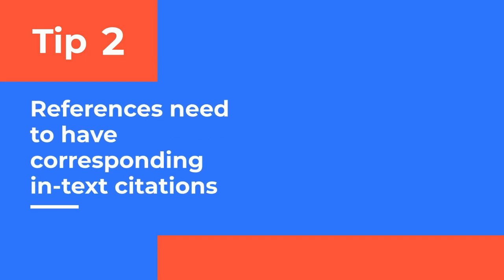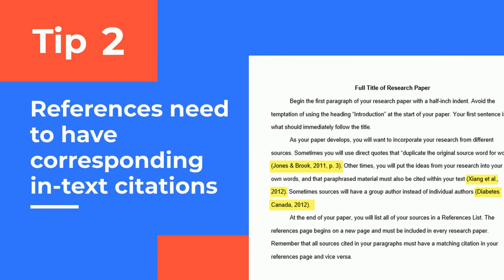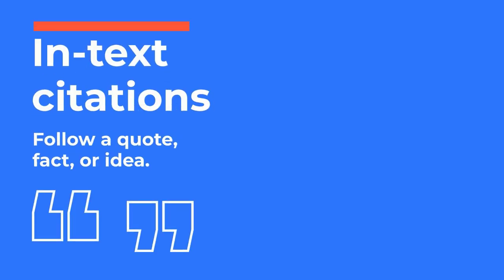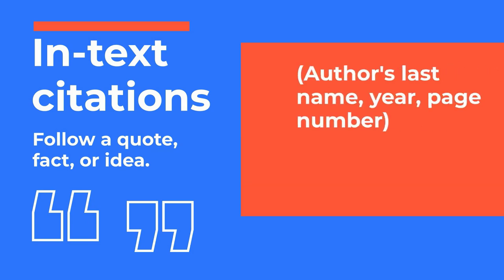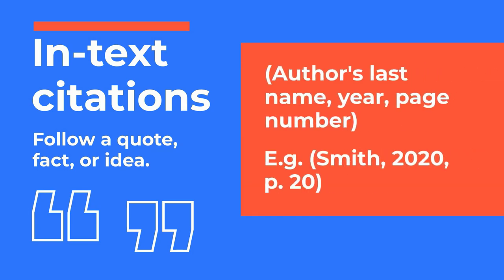Tip 2 – If something is on your references list, it should also appear somewhere earlier in your assignment as an in-text citation. An in-text citation usually follows a quote, fact, or idea, and it looks like this. The in-text citations match the full citations found on the reference list.